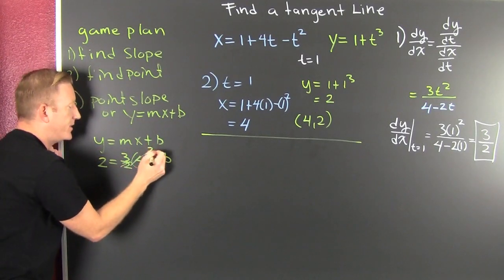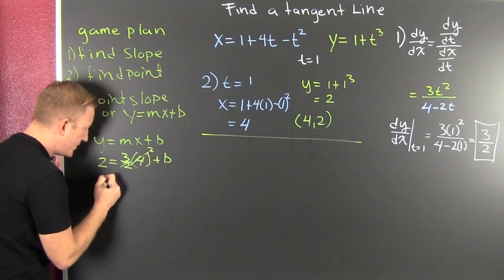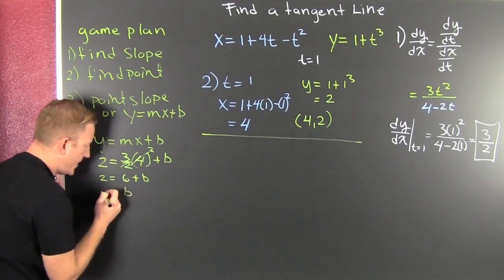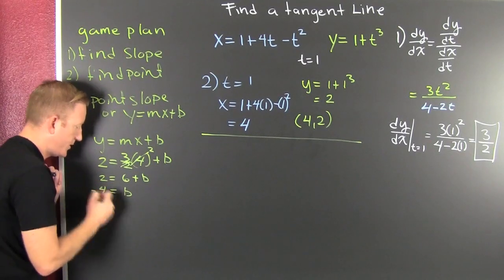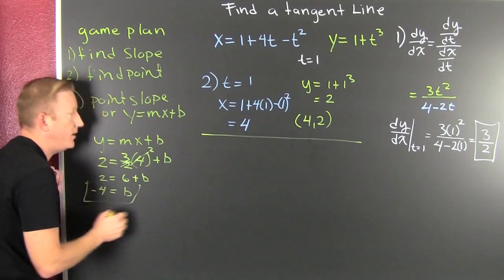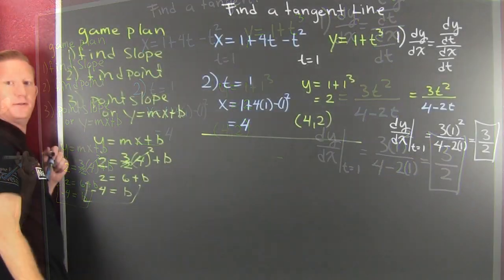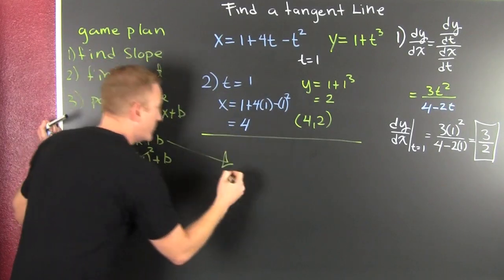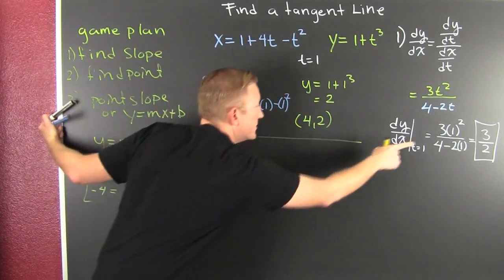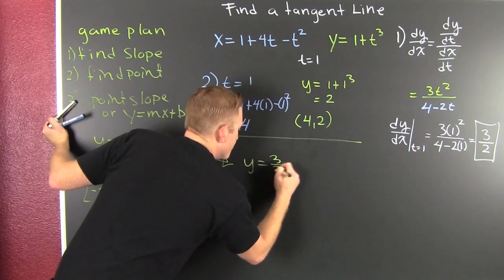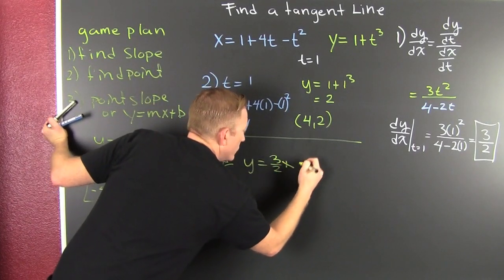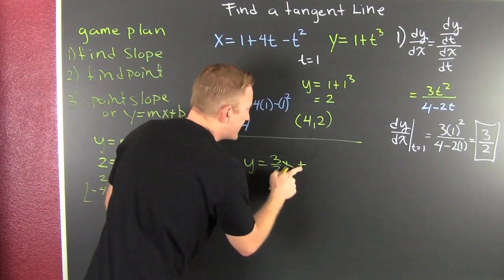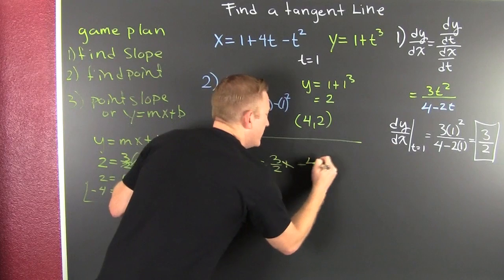We reduce by a deuce. So then 2 is equal to 6 plus b. And then b turns out to be minus 4. So now that I have that b there, and I have that slope way over there, I can put it right back up into this. Y equals 3 halves x plus my b, a minus 4.